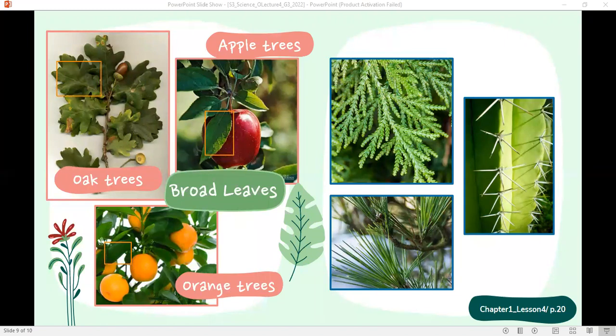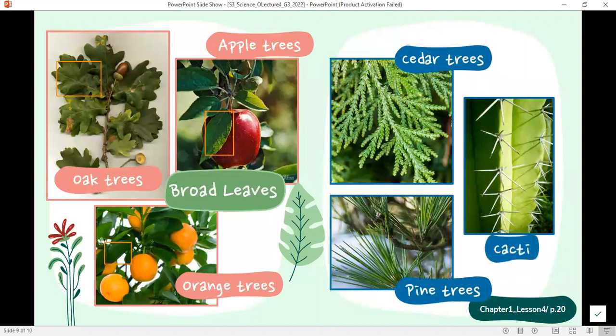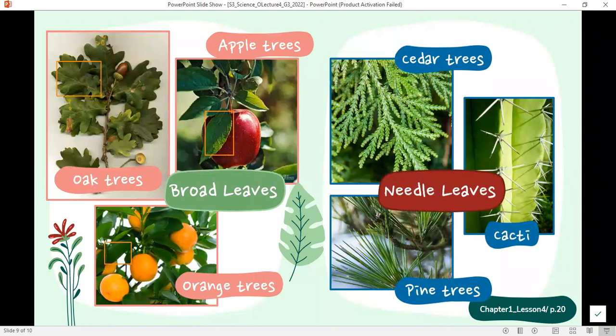And on the other side, look at the leaves of the cedar tree, the pine tree, and the cactus. So these leaves, as you can see, they are too thin and they look like needles, right? We call them needle leaves. So plants grow different kinds of leaves.